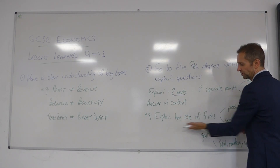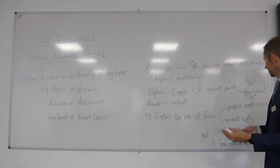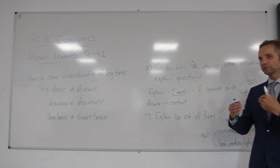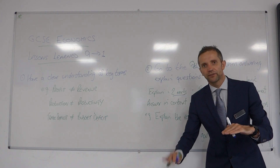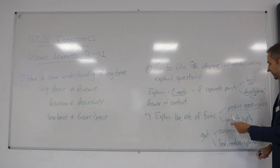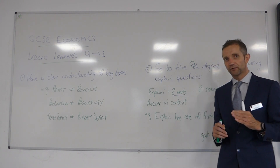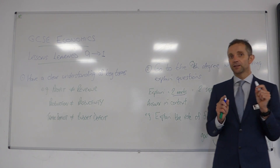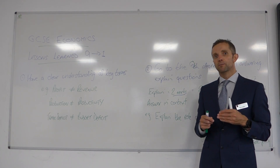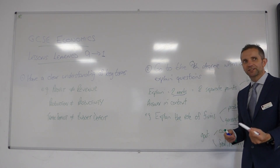For example, if the question is 'explain the role of a firm': a basic answer is that a firm is a producer — it produces goods and services. Then, stepping that up — not from the floor to the ceiling, just a small step — you could explain that firms are responsible for the supply element of market forces, the demand and supply. That developmental point would help you get the second mark.